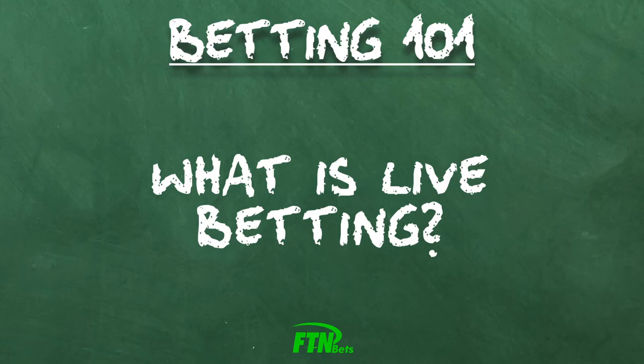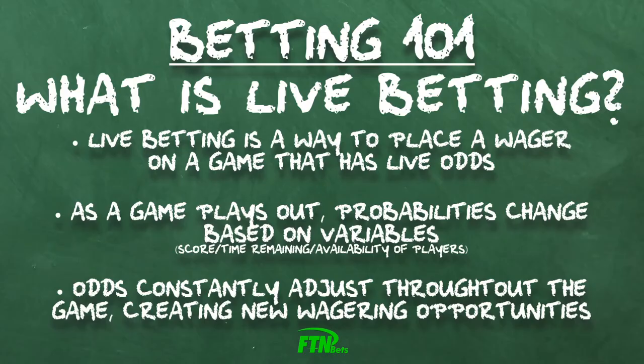A way to place a wager on a game that's taking place with live odds is live betting. As the game plays out, the probability of each team winning or losing changes based on variables like the score, time remaining, and availability of players. The odds are a reflection of a moment in time and will constantly adjust throughout the game, theoretically creating multiple new wagering opportunities based on the results of each play.